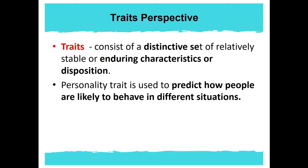Traits consist of a distinctive set of relatively stable or enduring characteristics or disposition. Personality trait is used to predict how people are likely to behave in different situations. For example, a person may be described as someone having personality traits such as cheerfulness or outgoingness. Based on these traits, she or he is likely to be involved in many social activities.